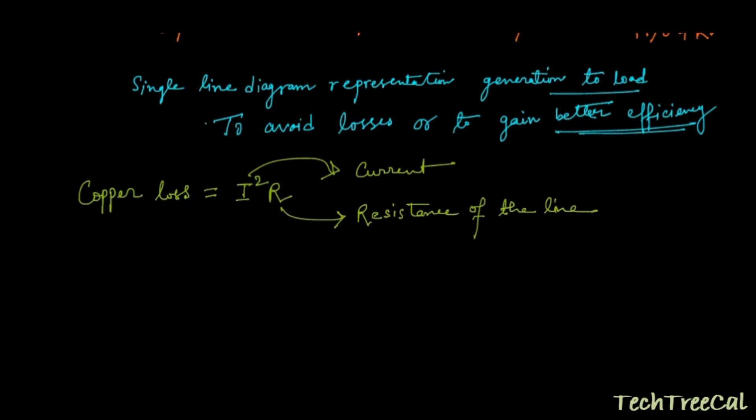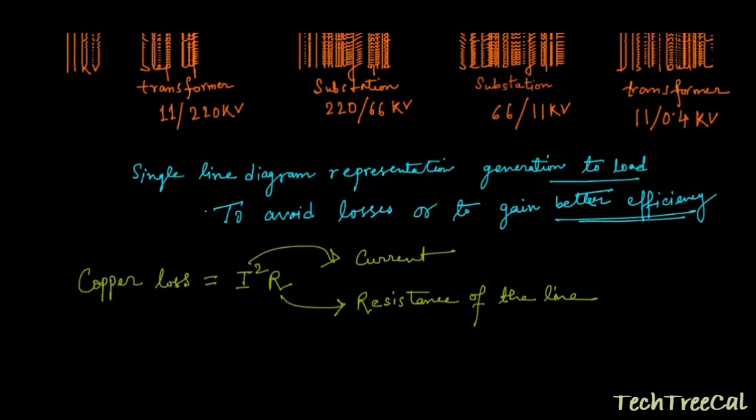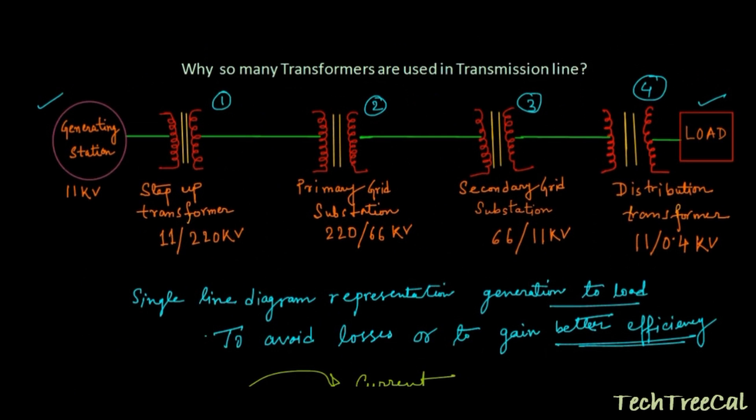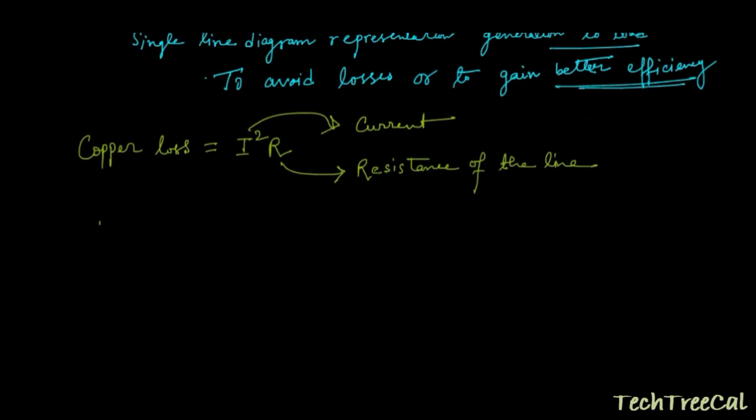Now what is the generated power at this generating station? It is equal to √3 VI cos φ. As it is generating three-phase power, the generated power P equals √3 VI cos φ, where V is your voltage, I is your current, and cos φ is your power factor.